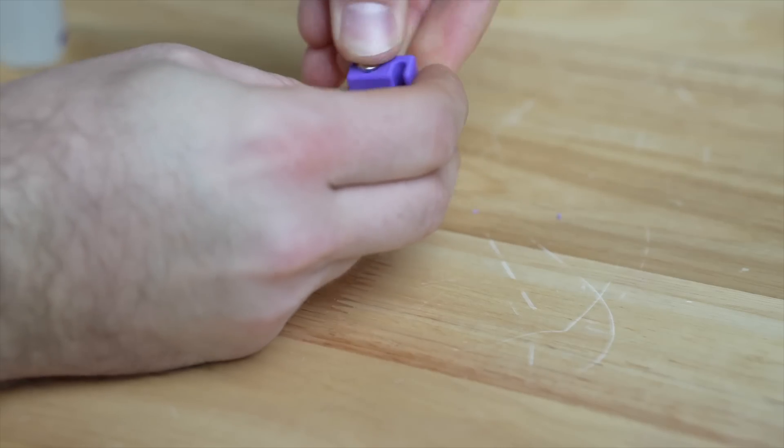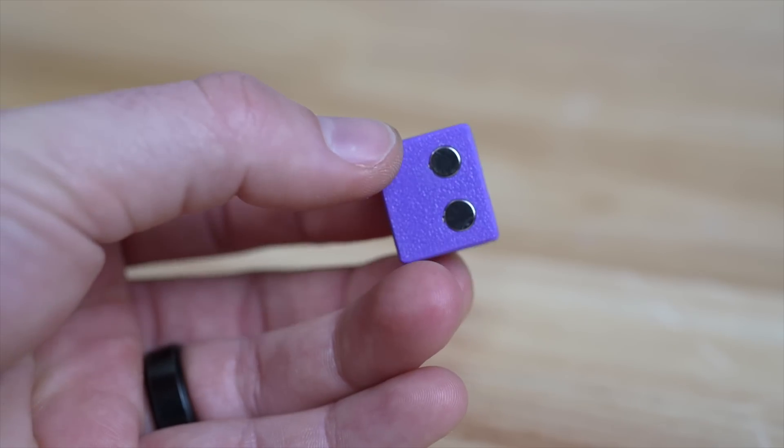You'll also need to insert a third magnet into the side of the block. At this point, the direction for that one does not matter.